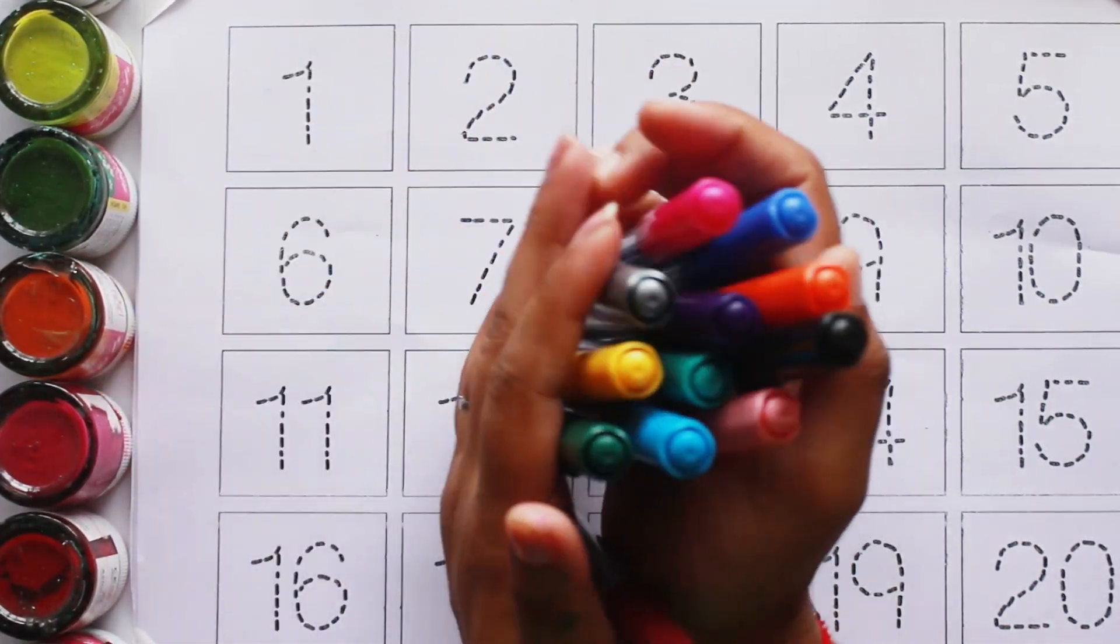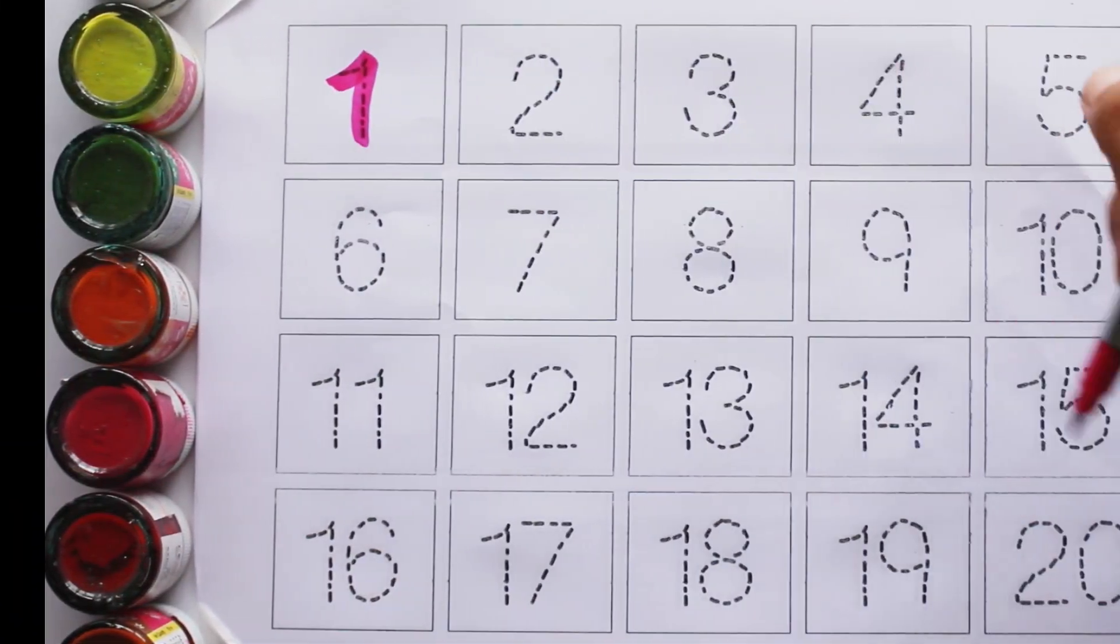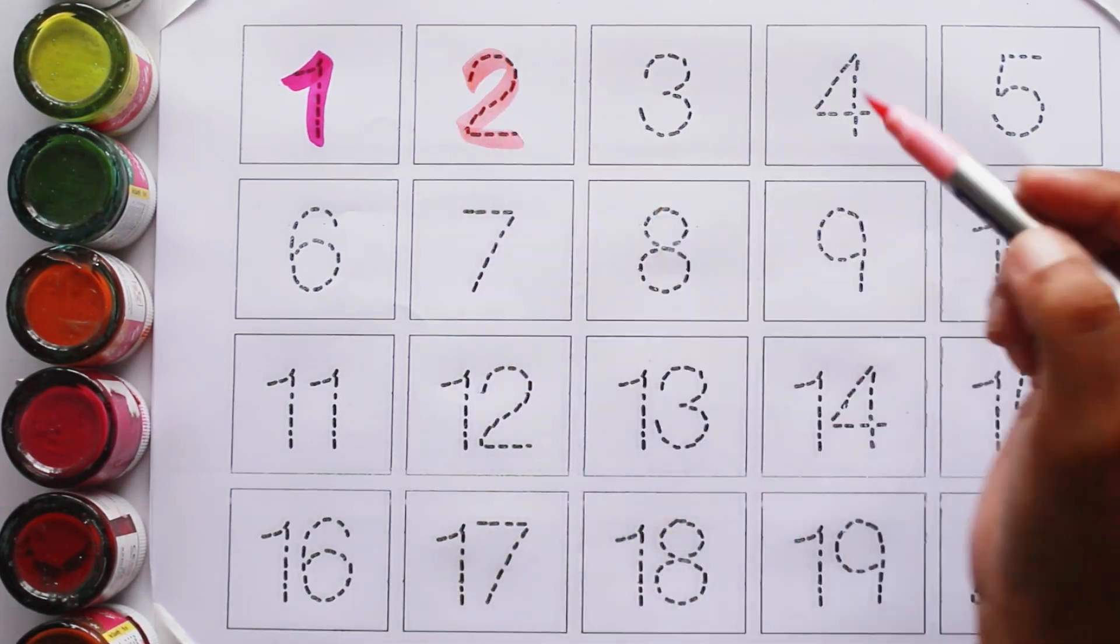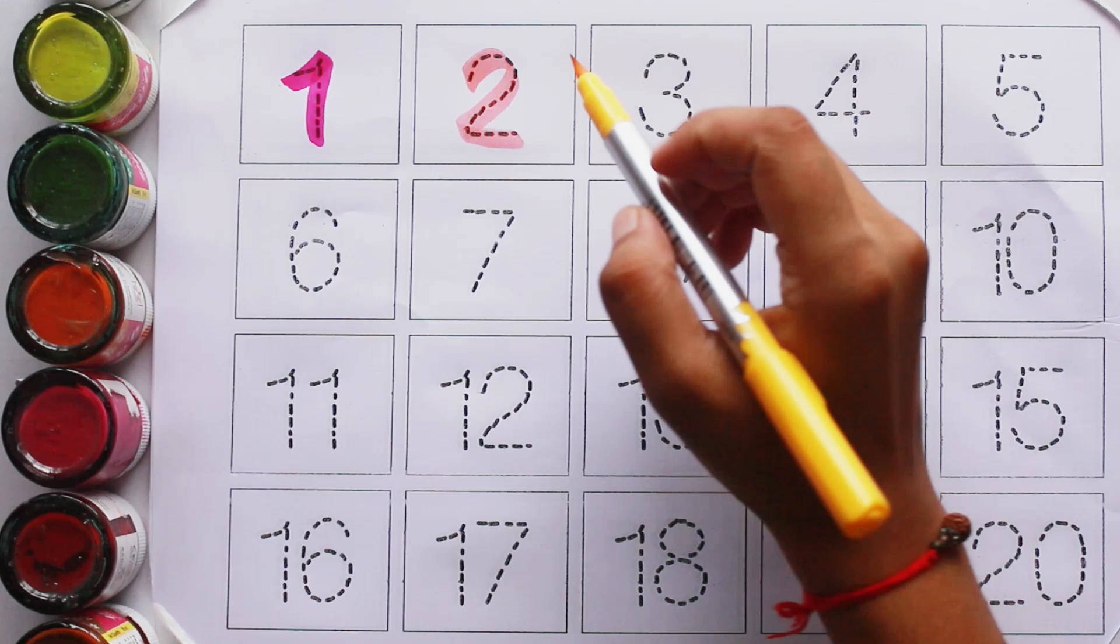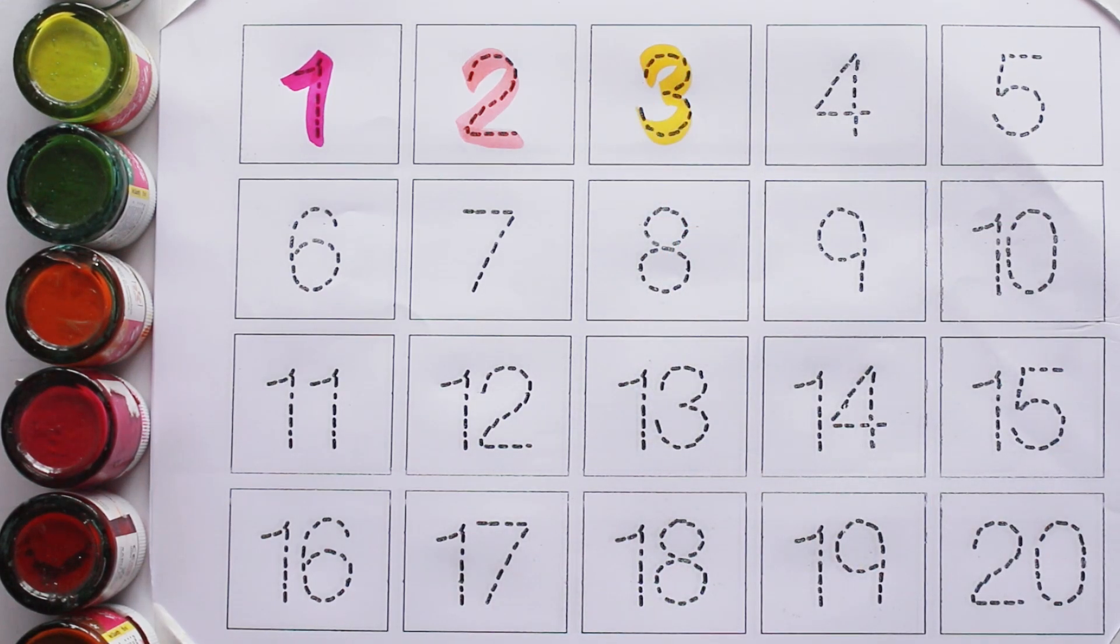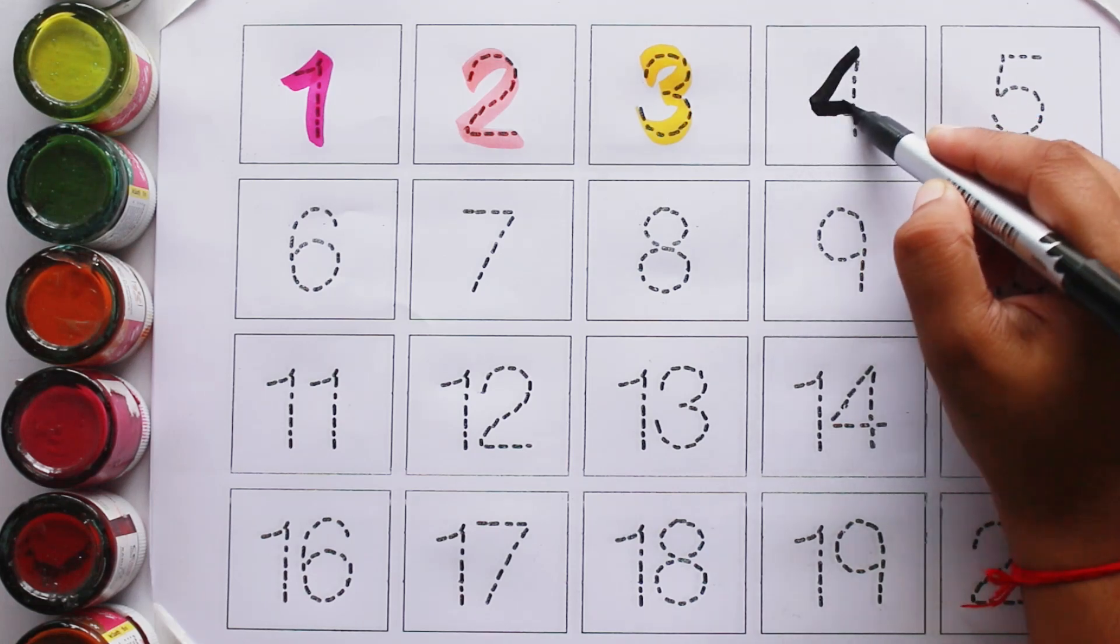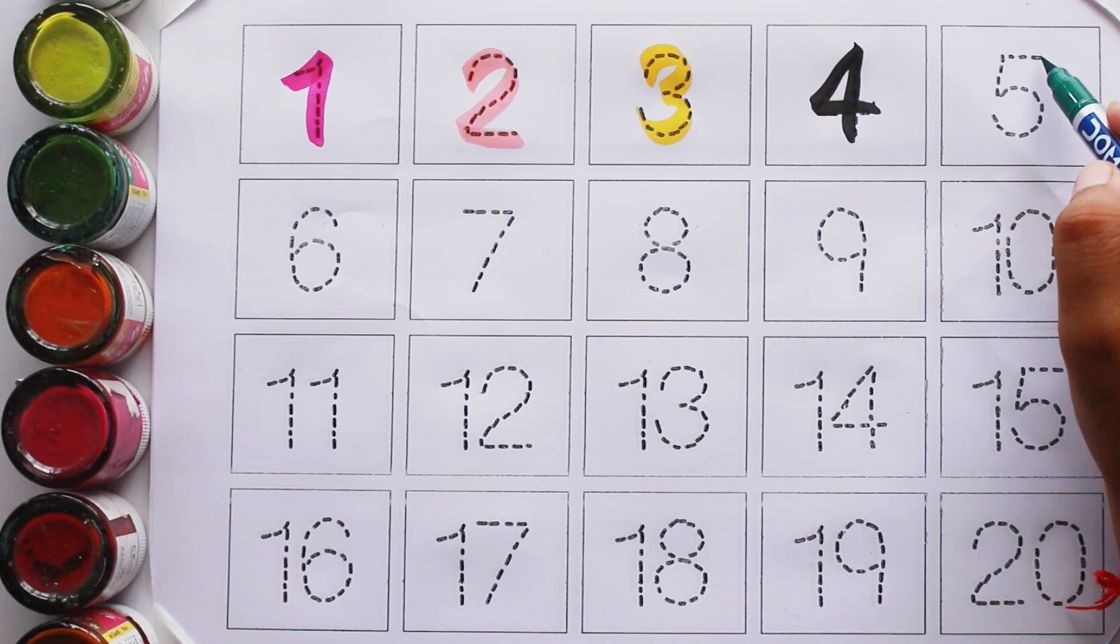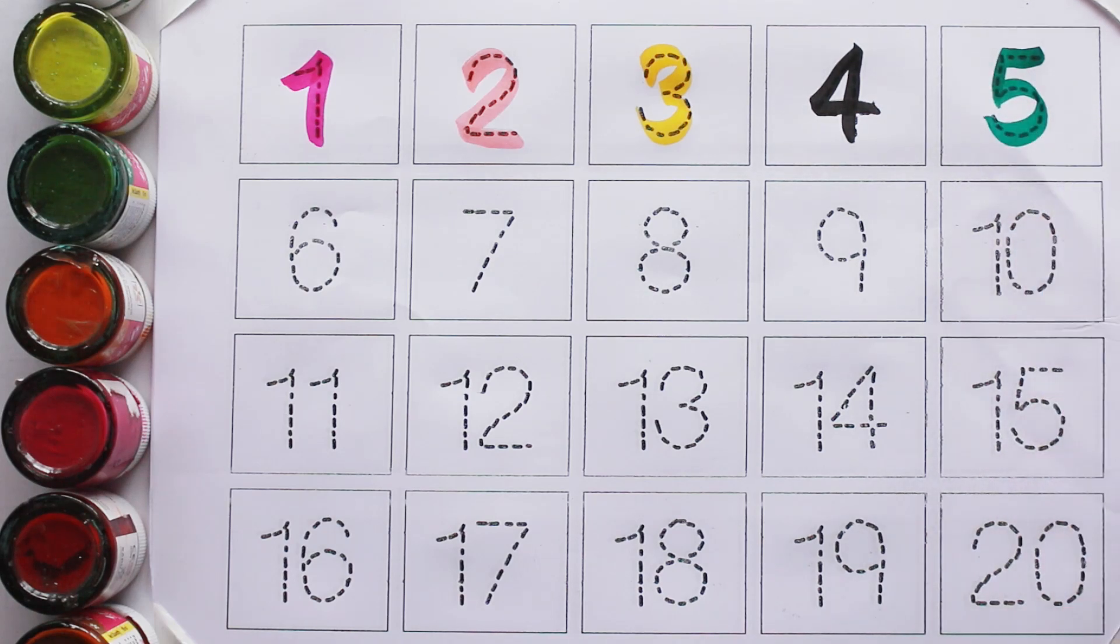Let's start with colors. Pink color. 1. Baby pink color. 2. Yellow color. 3. Black color. 4. Green color. 5.